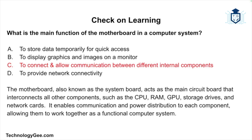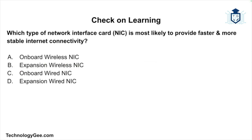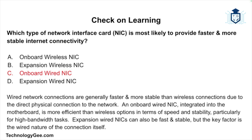Our final question: which type of network interface card is most likely to provide faster and more stable internet connectivity — an onboard wireless NIC, an expansion wireless NIC, an onboard wired NIC, or an expansion wired NIC? The correct answer is an onboard wired NIC. Wired network connections are generally faster and more stable than wireless connections due to the direct physical connection to the network. An onboard wired NIC integrated into the motherboard is more efficient in terms of speed and stability, particularly for high-bandwidth tasks. Expansion wired NICs can also be fast and stable, but the key factor is the wired nature of the connection itself.